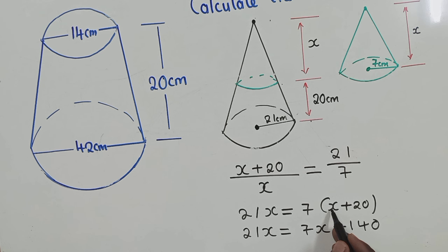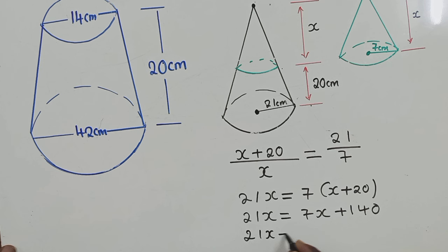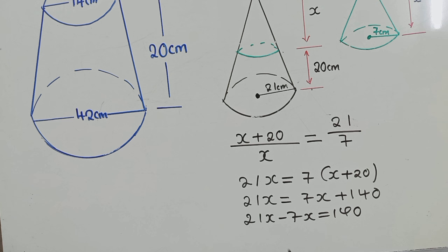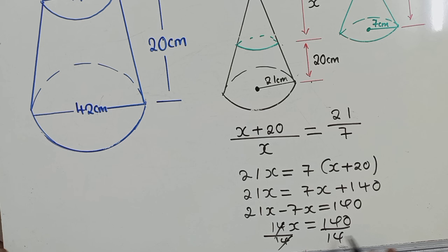The next thing will just be to group the like terms. Finally, we'll get 14x is equal to 140. To solve for x, divide by 14. Our x will be equal to 10.